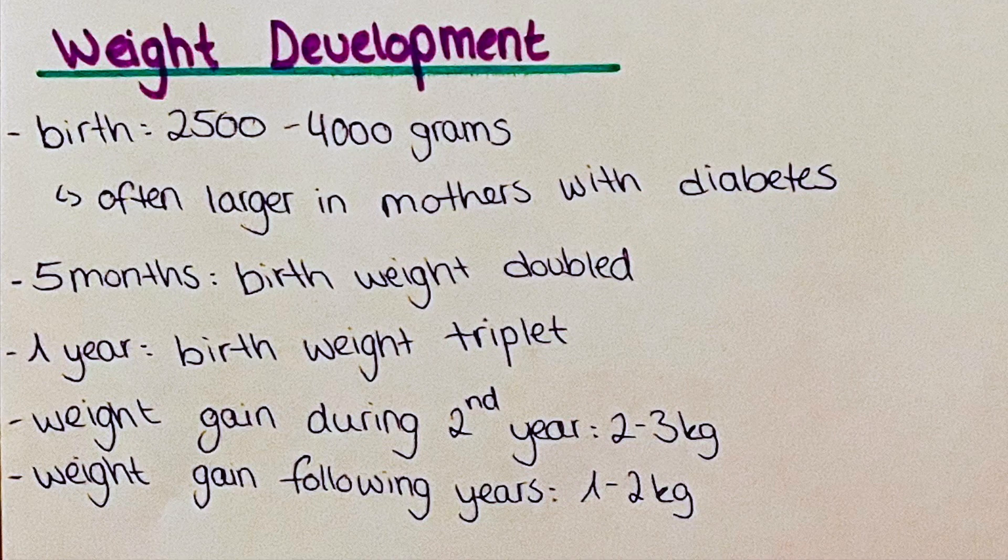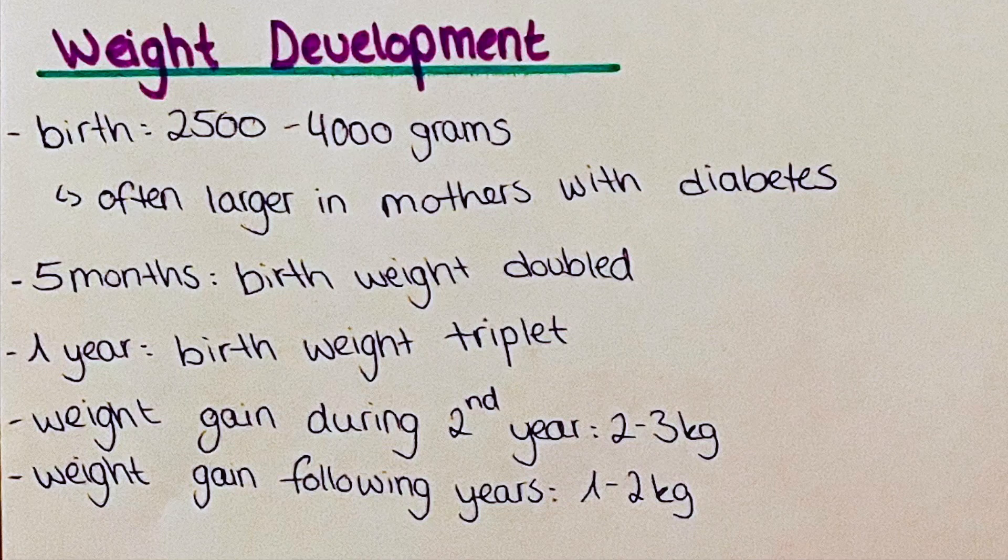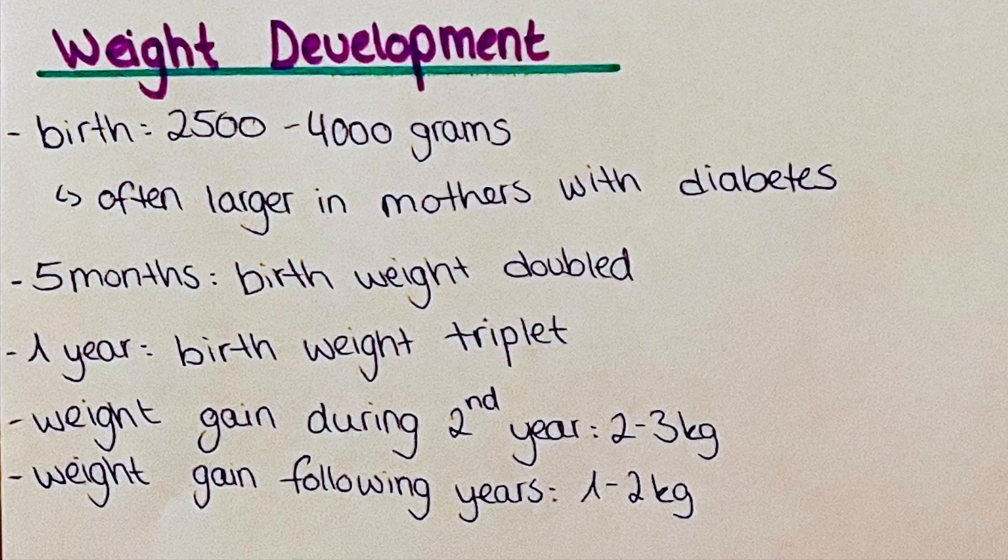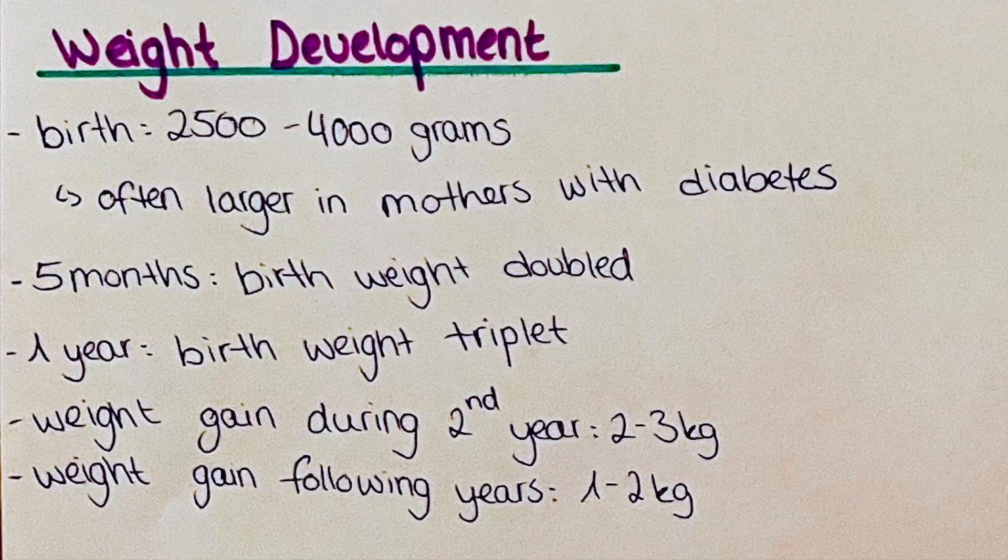So let's continue with the weight. Weight is dependent on endogenous and exogenous factors, but more of the exogenous factors such as feeding here plays an important role. When a baby is born, the normal weight ranges from around 2500 grams to 4000 grams, or 2.5 to 4 kilos to simplify it.